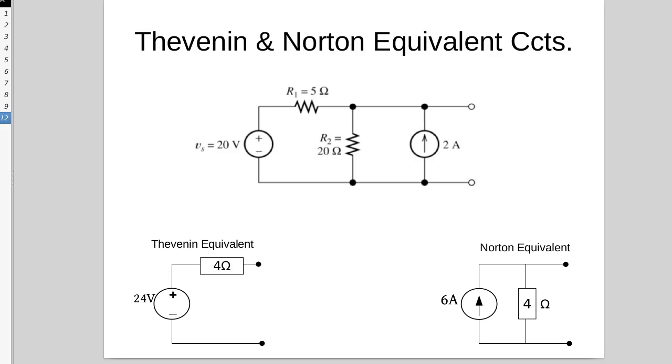On the left, our open circuit voltage was 24 volts, internal resistance of 4 ohms. On the right, our short circuit current was 6 amps, internal resistance of 4 ohms.